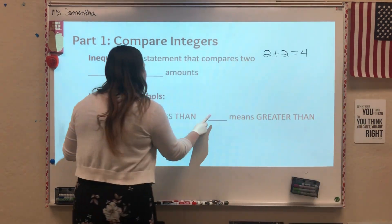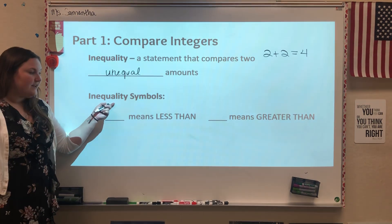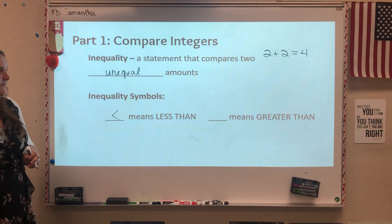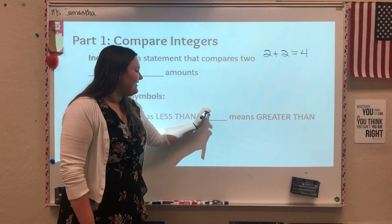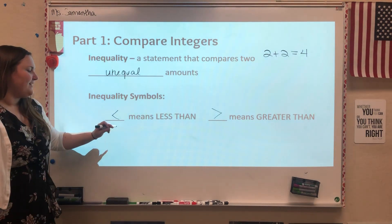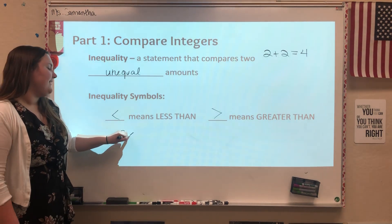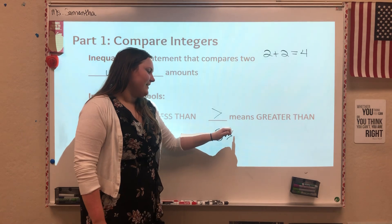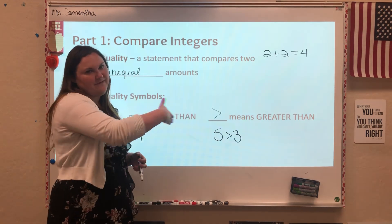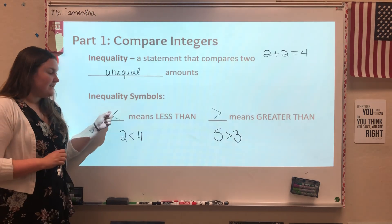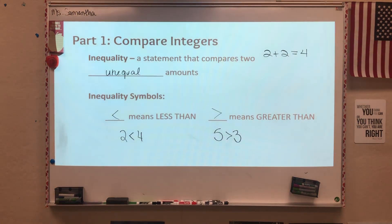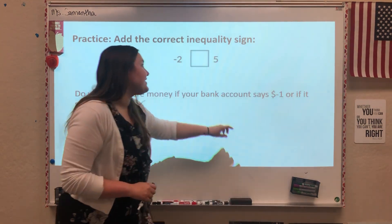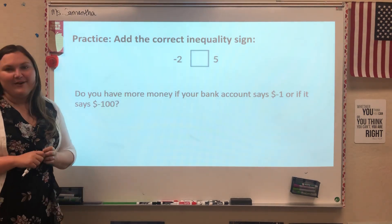Instead, there are two symbols we use when talking about inequalities. The first one means less than, and the other symbol means greater than. For example, I could say two is less than four, or five is greater than three. You're always reading them from left to right. So one of the first things we want you to do is these two questions right here. The first question is asking you what inequality sign goes in the box. Go ahead and try that one now.